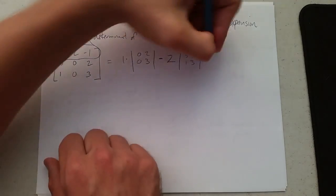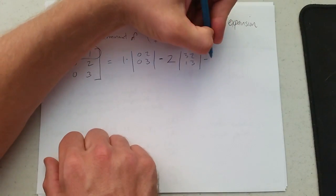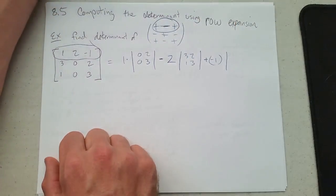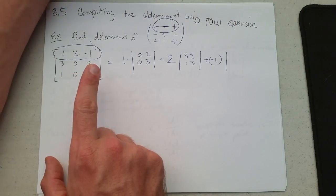And last up, plus negative 1. And 3, 0, 1, 0.